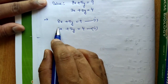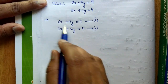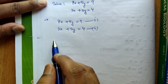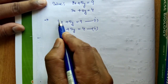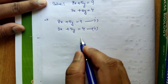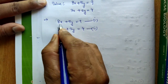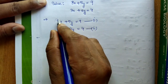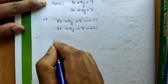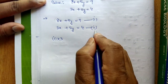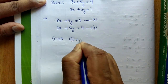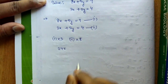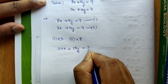We need to eliminate either x or y, so we must equate the coefficients. Let's choose x. The coefficients are 8 and 3. Find the LCM of 8 and 3, which is 24. So we need to make both x-coefficients equal to 24. To convert 8 to 24, multiply by 3 — so multiply Equation 1 by 3. This gives 24x plus 15y equals 27. Remember to multiply every term.